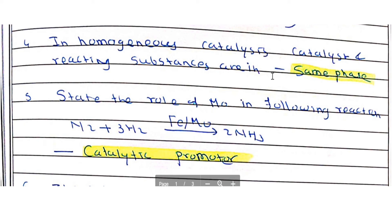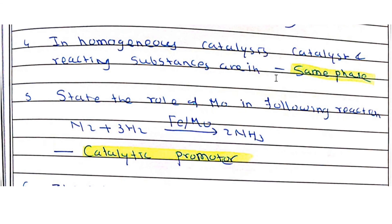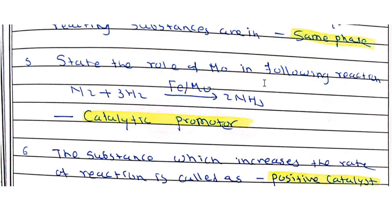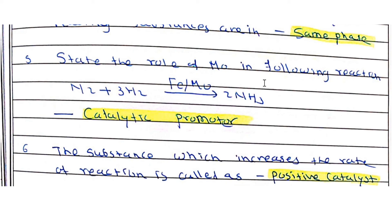In homogeneous catalysis, the catalyst and reacting substances are in the same phase — solid, liquid, or gaseous. In the Haber's process, molybdenum acts as a catalytic promoter while iron acts as the catalyst.